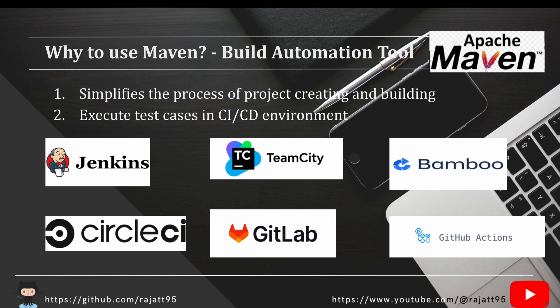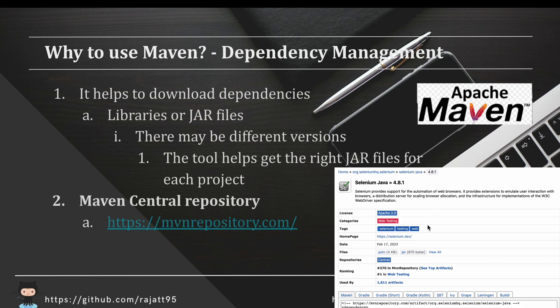With CI/CD tools you can create cron jobs — for example, executing your test cases every day at 10 PM IST — or you can execute test cases when there is a code push to the pre-production branch of your main application. These are different configurations and settings you can do with pipelines.